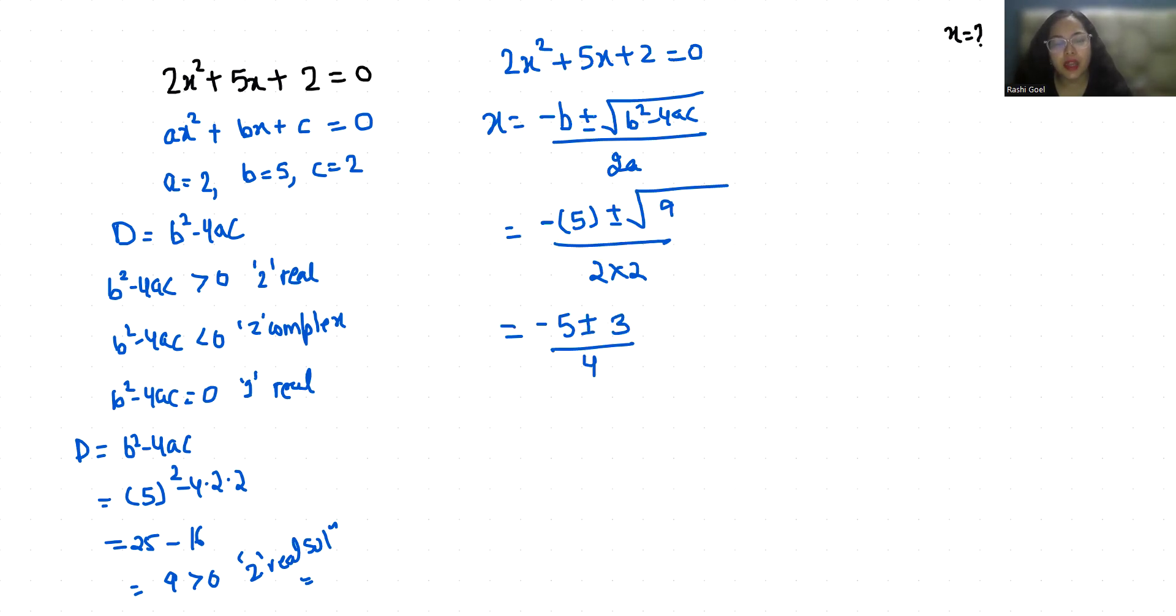So x₁ is -5 + 3 by 4, and x₂ is -5 - 3 by 4. So x₁ is -2 by 4 which is equals to -1/2, and x₂ is -8 by 4 which is equals to -2.